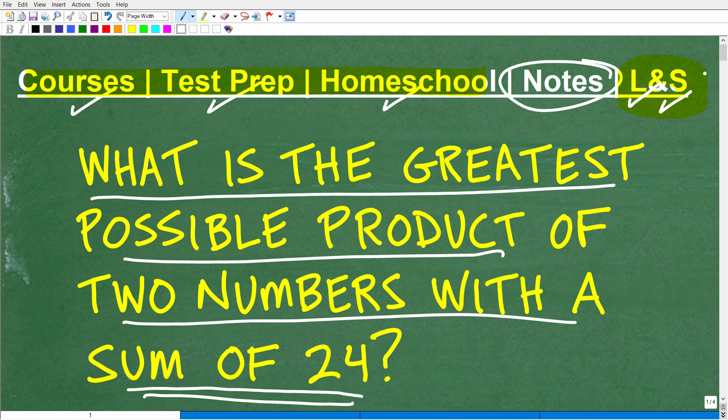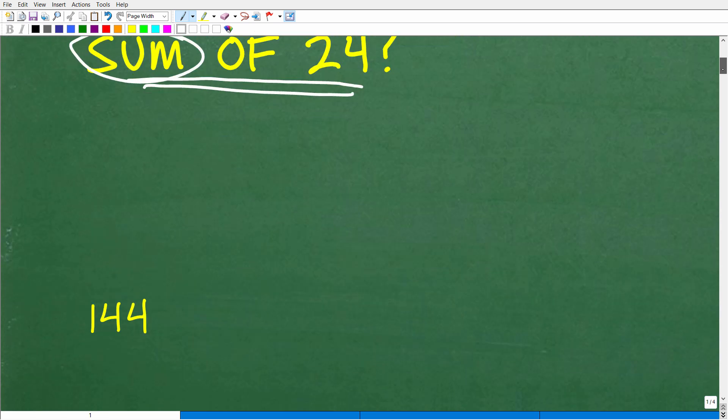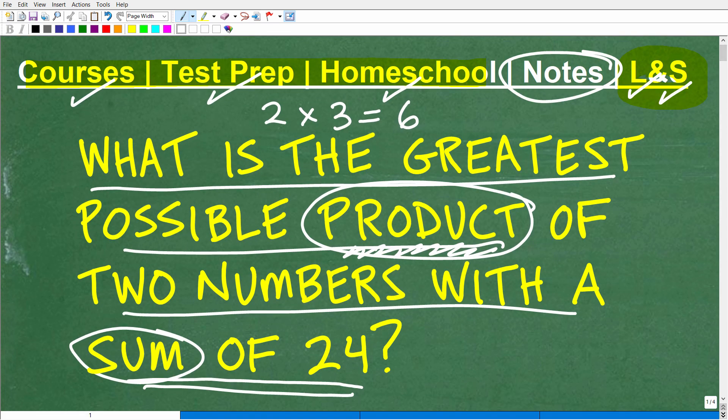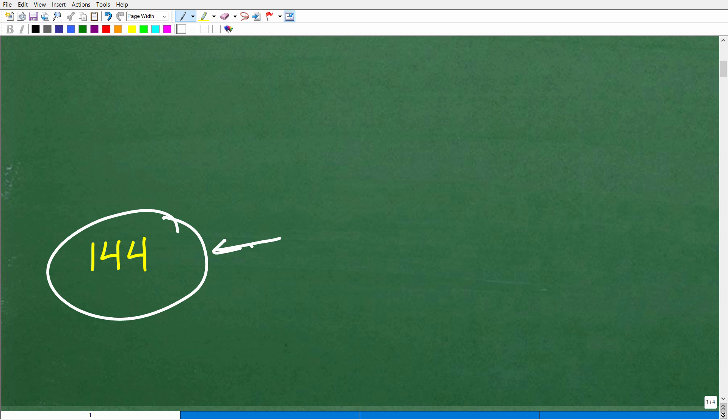Okay, so interesting problem here. Let me read it one more time. What is the greatest possible product? Let's give you some clarification. What does this word product mean? The product is the result of multiplication. So the product of 2 and 3 is 6. The product is the result of multiplication. Let's take a look at the answer right now. The answer is 144.